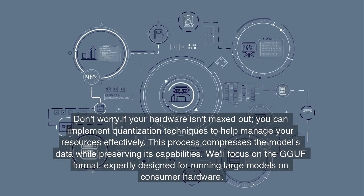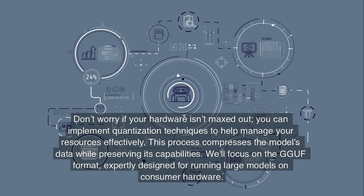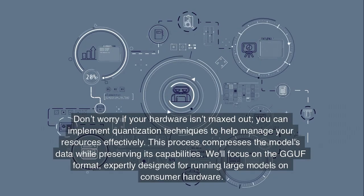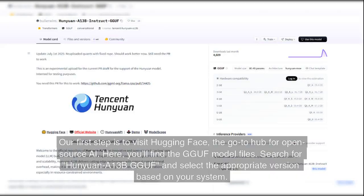Quantization compresses the model's data while preserving its capabilities. We'll focus on the GGUF format, expertly designed for running large models on consumer hardware. Our first step is to visit Hugging Face, the go-to hub for open-source AI. Here you'll find the GGUF model files — search for Hanyuan A13B GGUF and select the appropriate version based on your system.